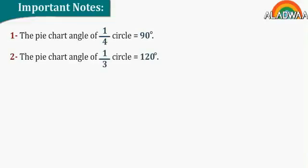Important notes. Number 1: The pie chart angle of quarter a circle equals 90 degrees. Number 2: The pie chart angle of one third of a circle equals 120 degrees. Number 3: The pie chart angle of half a circle equals 180 degrees.